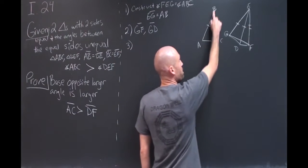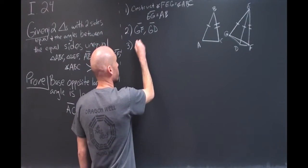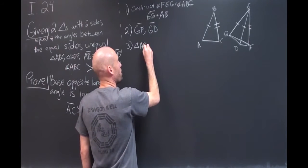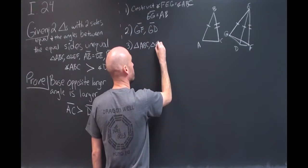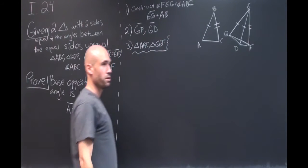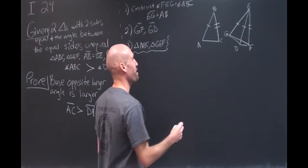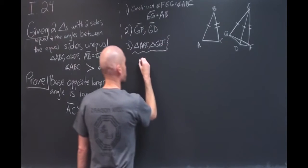So we know that AB and GE are equal. We're trying to compare triangles ABC and triangle GEF. So I'll put this here just in case we get lost on which triangles we're looking at. From there we know that AB is equal to GE, we constructed it that way.